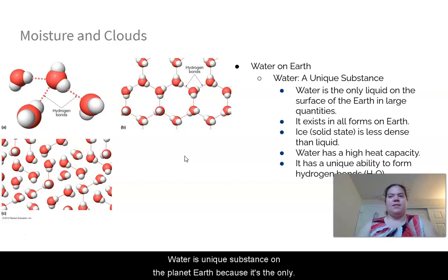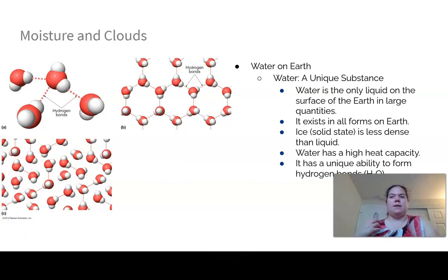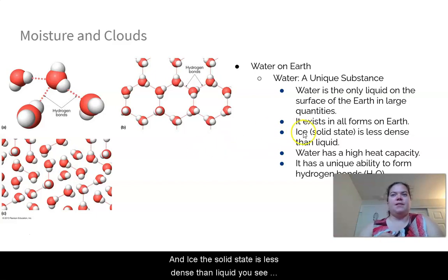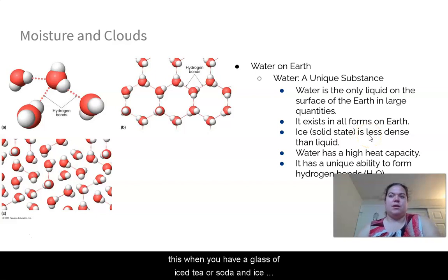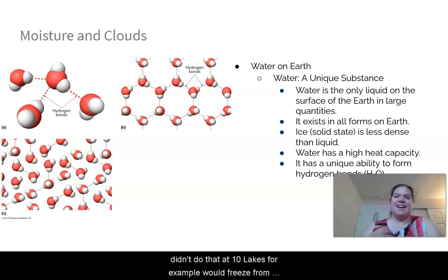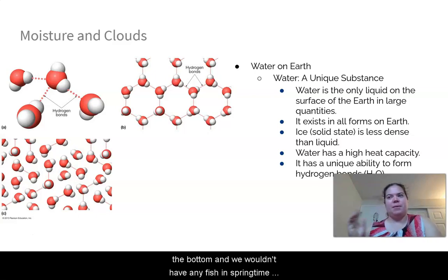Water is a unique substance on planet Earth because it's the only substance that has a large amount of liquid on the surface. It exists in all forms on Earth, and ice — the solid state — is less dense than liquid. You see this when you have a glass of iced tea and the ice floats to the top.